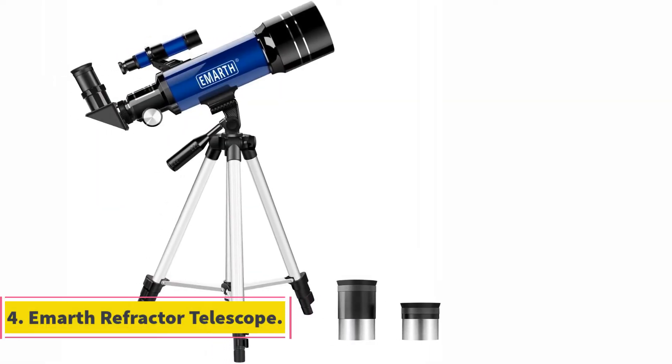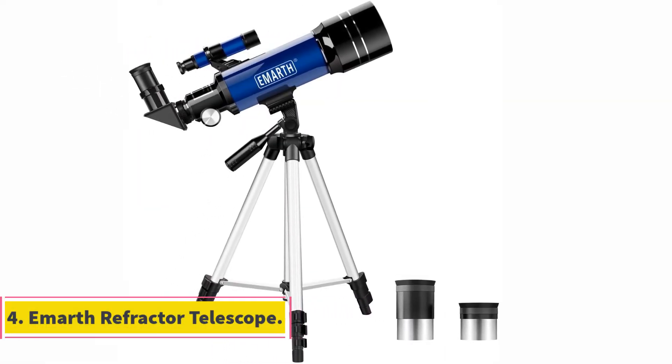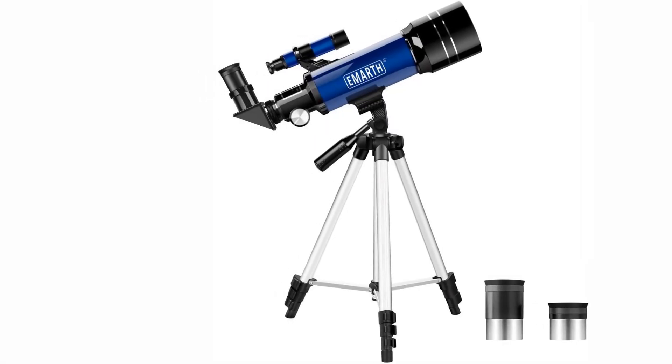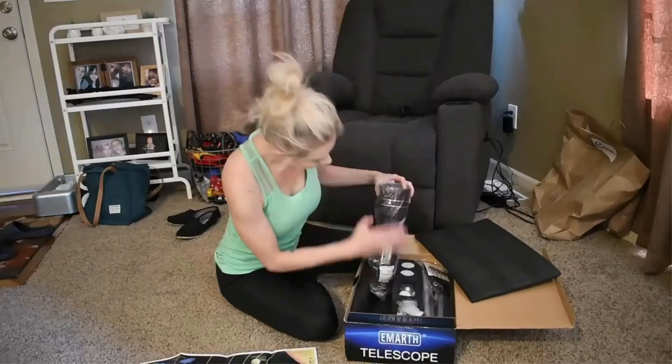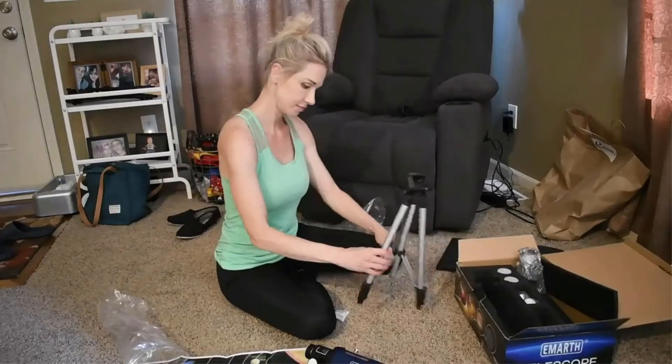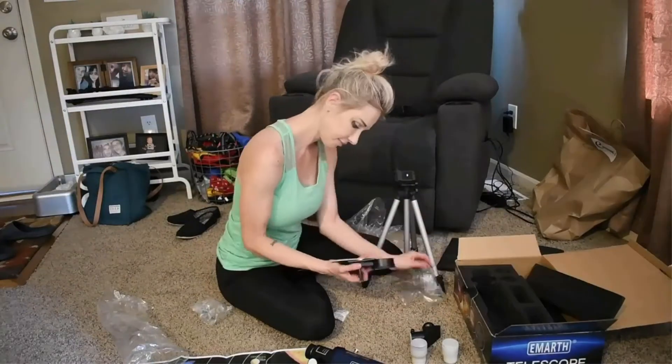At number 4, Emath Refractor Telescope. The Emath is a refractor telescope that is specifically designed to be used by children. However, despite essentially being a child's toy, it includes all of the same features you would expect to encounter with any of the other products on our list.